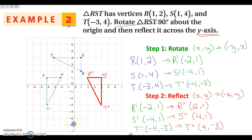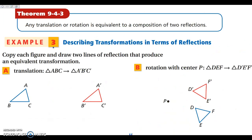If you have any questions about that, go ahead and write it down now. What we're looking at here is that a translation or a rotation can be found by doing two reflections.